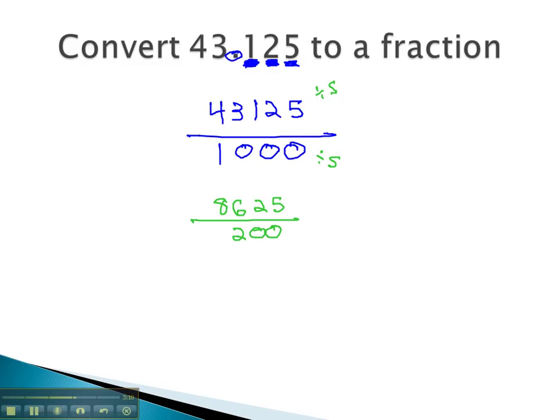This isn't reduced though, because we can still divide by 5. You notice we end in a 5 and a 0 again, so we'll divide by 5 a second time.